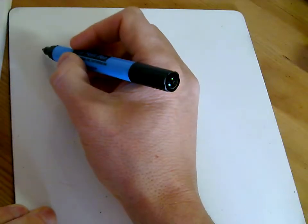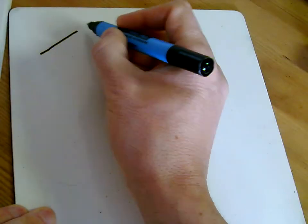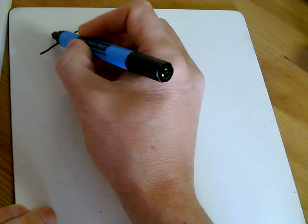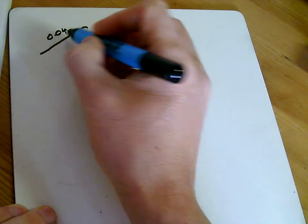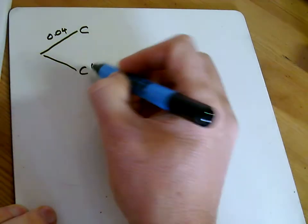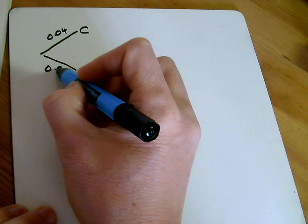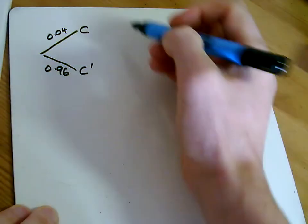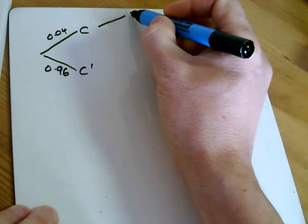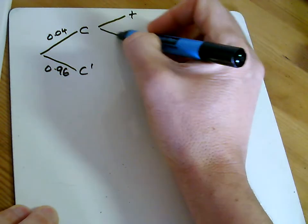Question eight is a nice question here. We've got a condition. Four percent of the population have the condition, but the others don't. So 96 percent don't have the condition. But there's a test for the condition and the test might be positive or negative.